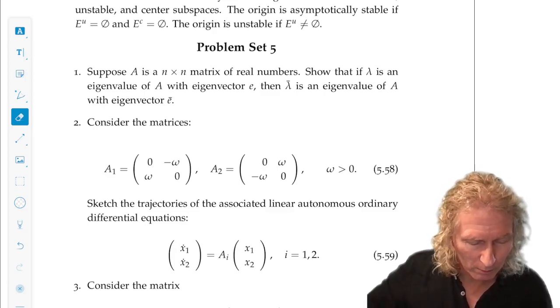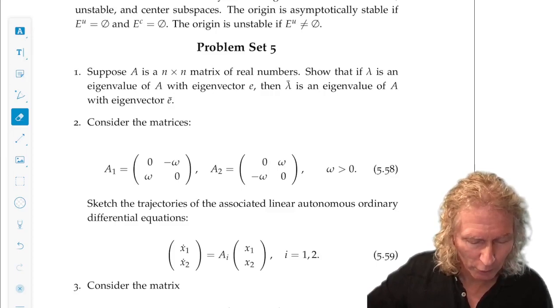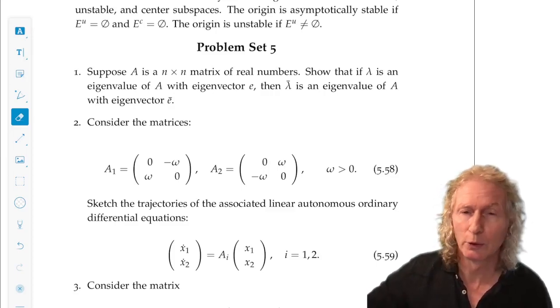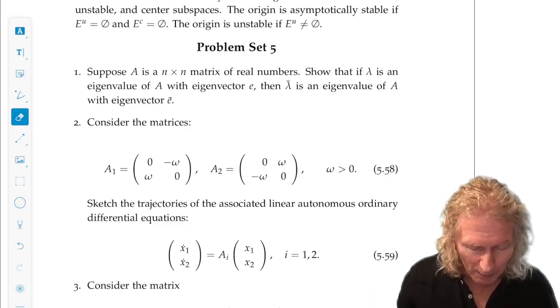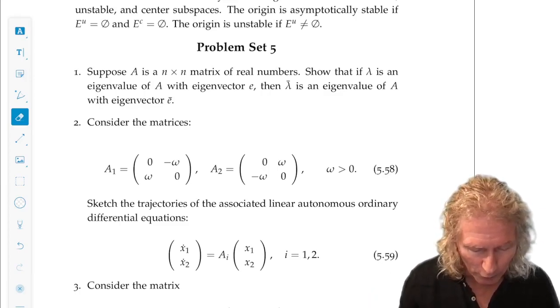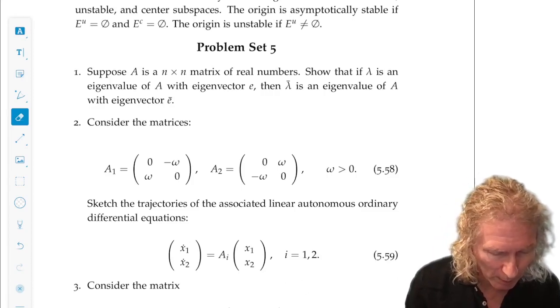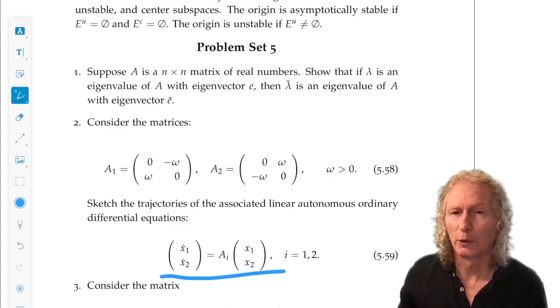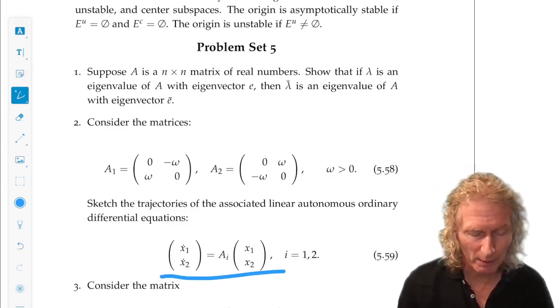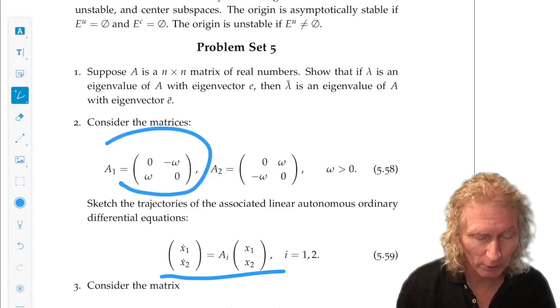So in problem 2, consider these two matrices that define a 2x2 two-dimensional linear system. And I want you to find the solution or the flow generated by each one.